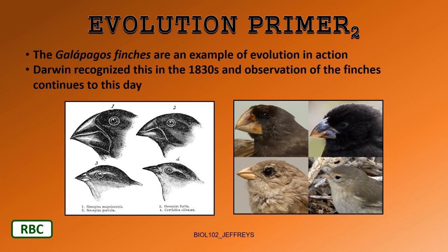The study of Galapagos finches continues to this day. What you see here are the seed-eating finches — there are many different kinds. Some eat insects, some eat plant material, and some eat seeds. Darwin noticed that birds with large broad beaks can crack open large thick-shelled seeds, while birds with thin narrow beaks can only crack open tiny thin-shelled seeds, with a series of intermediate birds in between feeding on medium-sized seeds.